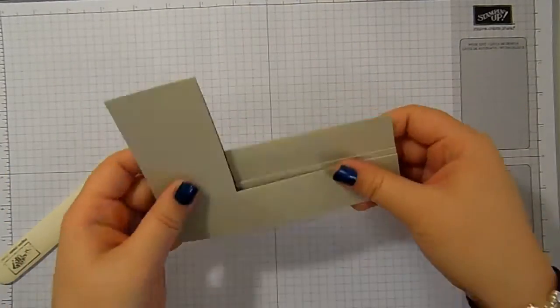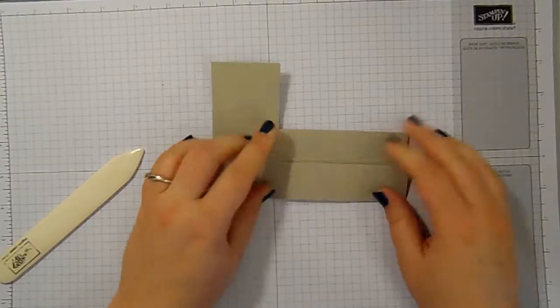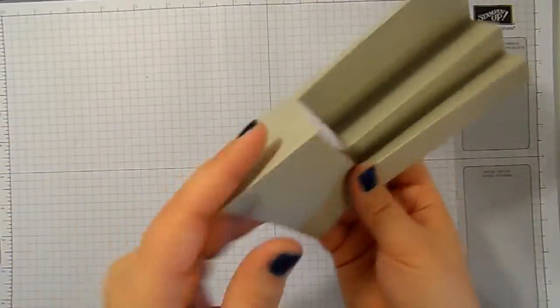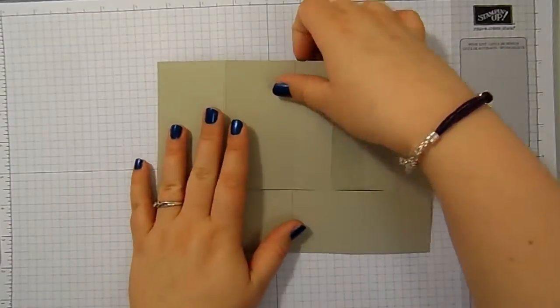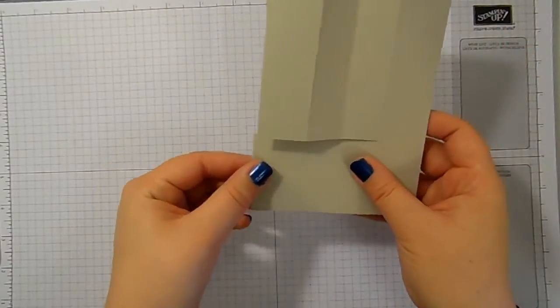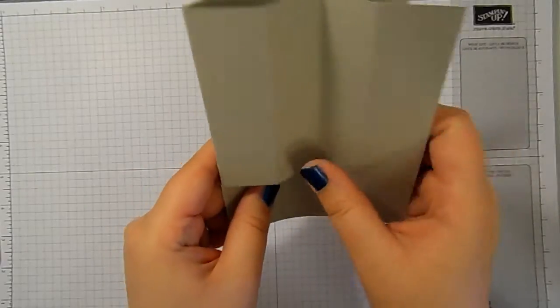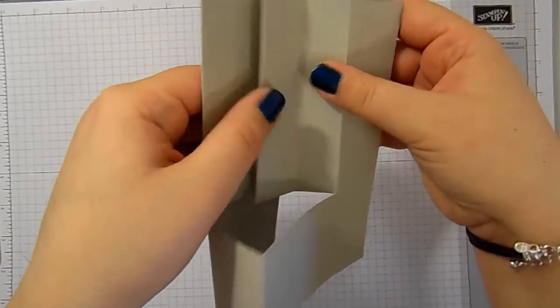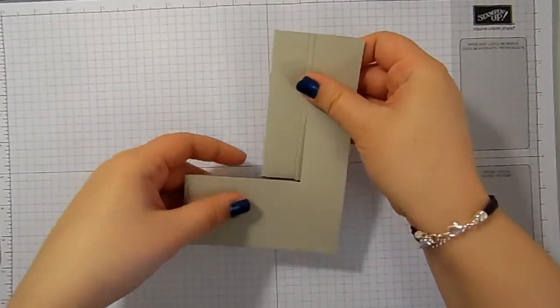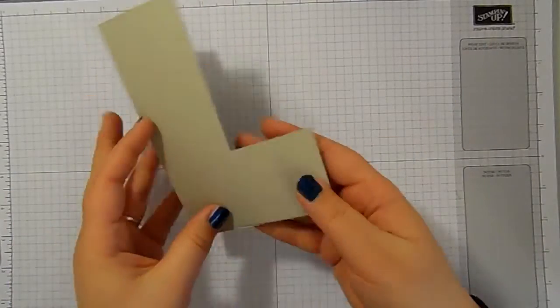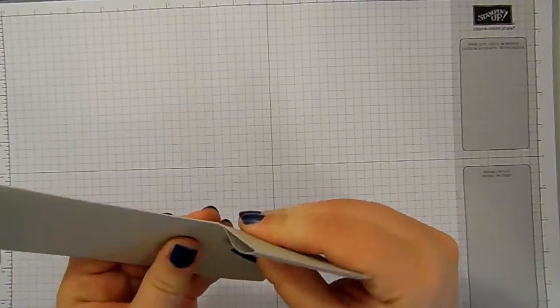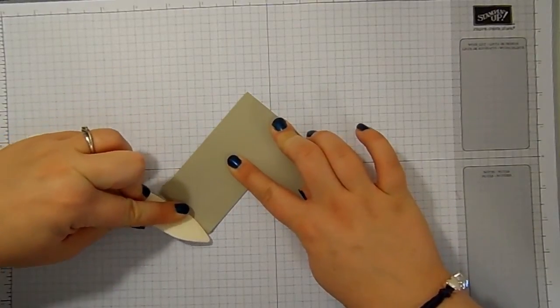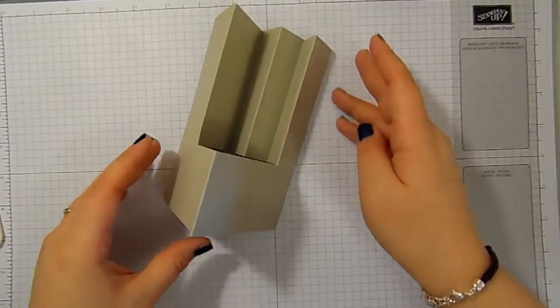So you end up with that. Isn't that clever? So I'll go through that again. That top, when you initially fold it, fold it in half like a card. So this piece is your mountain fold. Now open it back out again. This first score is a mountain, valley, mountain, valley, mountain. And that gives you a wonky back. That's better. There we go.